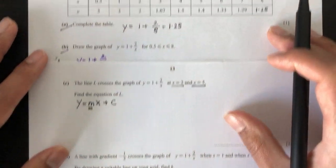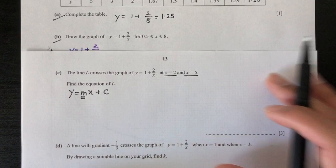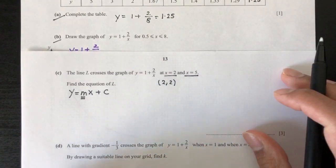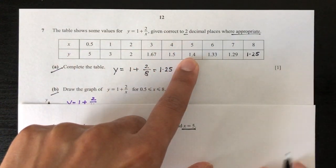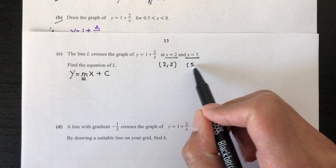When x equals 2, let's find the value of y. So if you go to your table, x equals 2, the value of y is 2. So one passing point will be (2, 2). Now same thing, x equals 5, y equals 1.4. So the other passing point will be (5, 1.4).